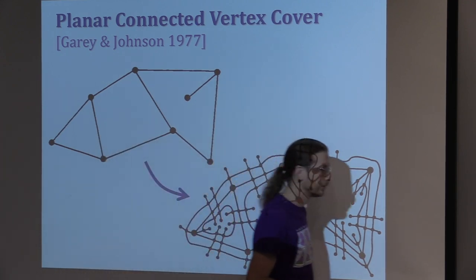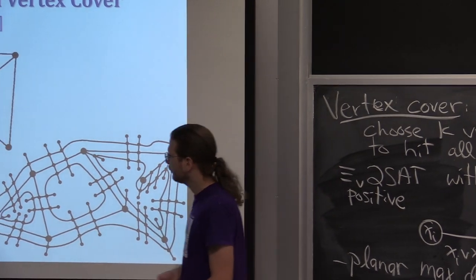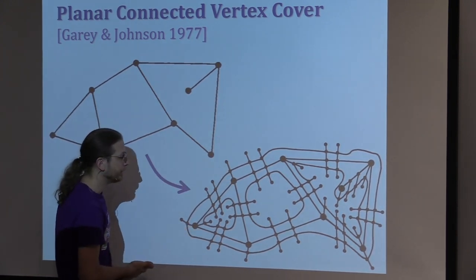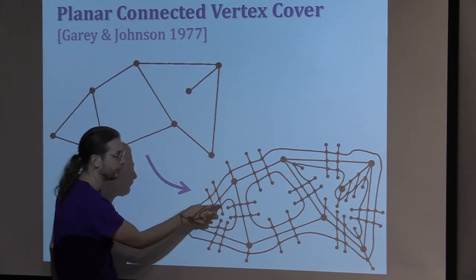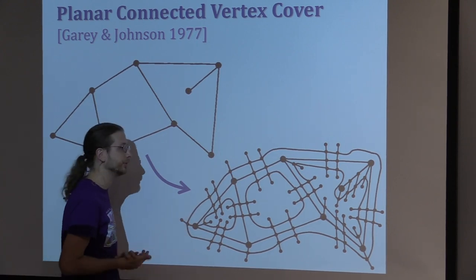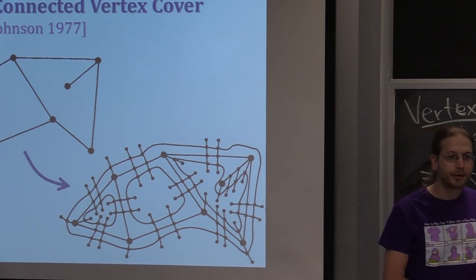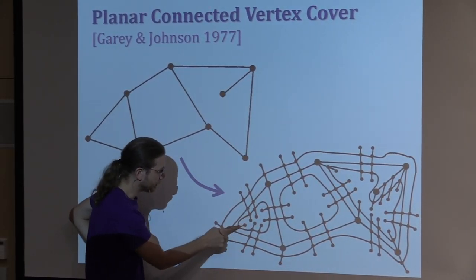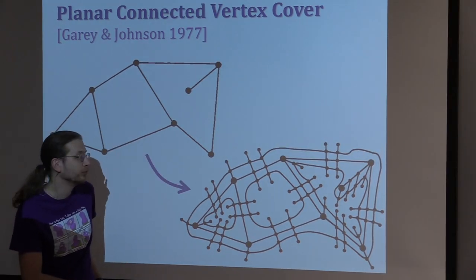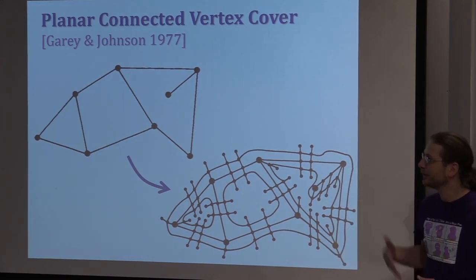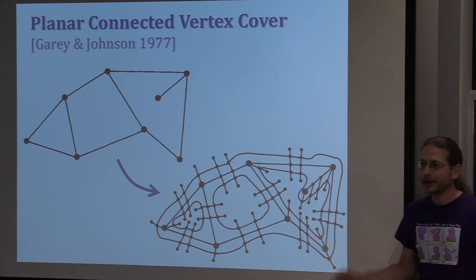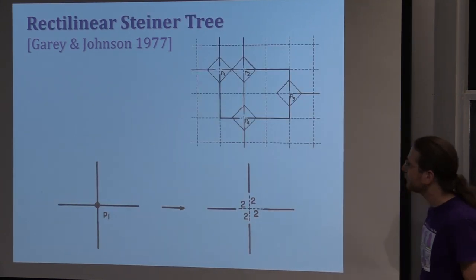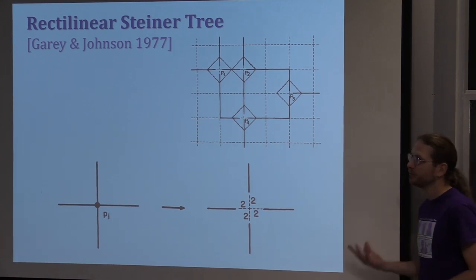A question: what stops you from taking both middle vertices? If you choose both, you know that the other four are there, so you can always move one of them to the original vertex and get a valid vertex cover. Connected vertex cover is actually an important problem — people think about it a lot for networking applications where you want to build a backbone that can reach everybody. But Garey and Johnson's original motivation for introducing it was rectilinear Steiner tree, also an important networking problem.